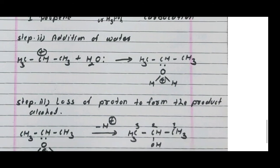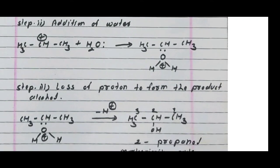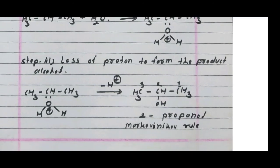Step three: loss of a proton (−H⁺) to form the product alcohol. Loss of proton gives CH₃-CHOH-CH₃ — 2-propanol — with OH attached to carbon number two. This formation of 2-propanol is according to Markovnikov's rule. Thank you for listening.